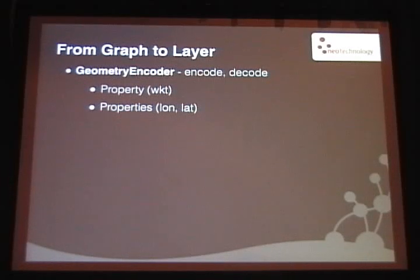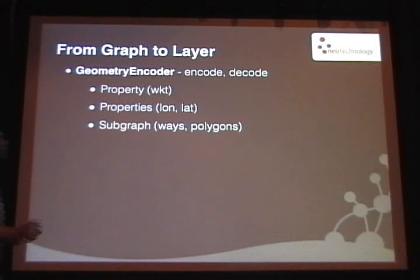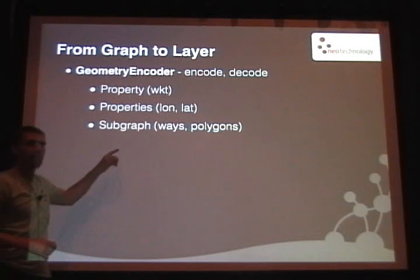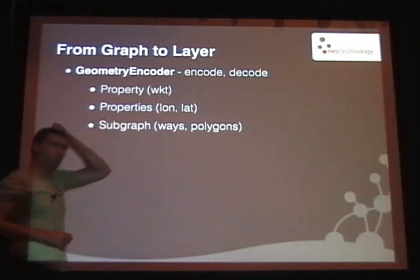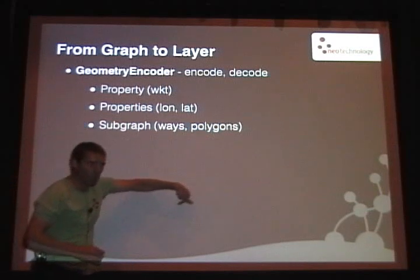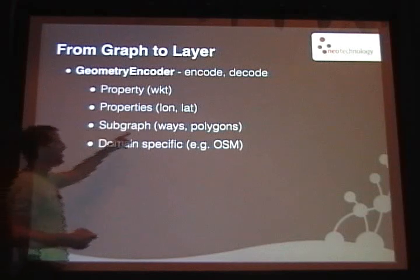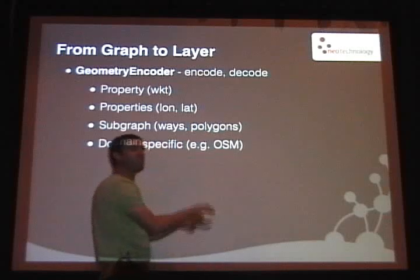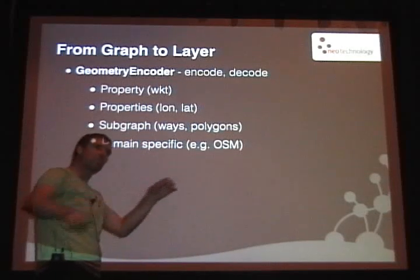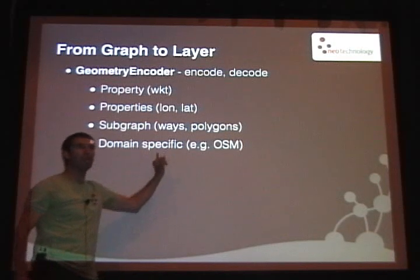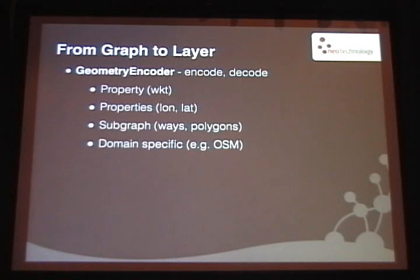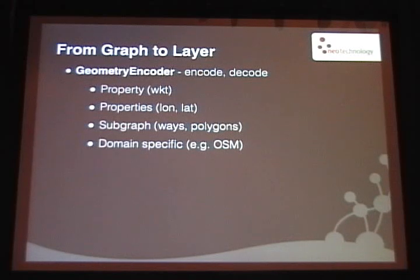That's a normal case for spatial indexes like Foursquare, where you have points. More complex is a subgraph where you say, given a number of points or segments, construct a subgraph — and that can mean anything in the graph. You can construct a little subgraph that represents the way or the polygon, and attach other nodes to the endpoints. And what we saw before was a domain-specific adapter that goes to those nodes, traverses them, and fishes out whatever it needs.